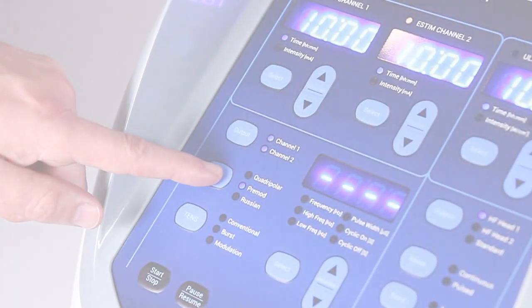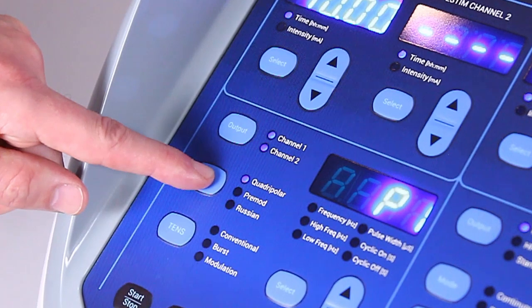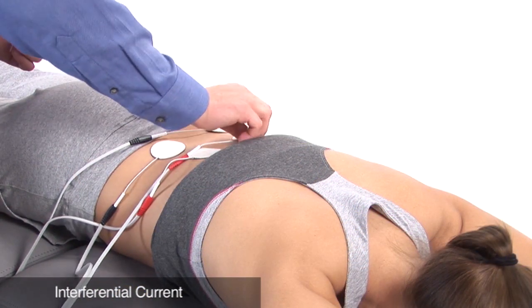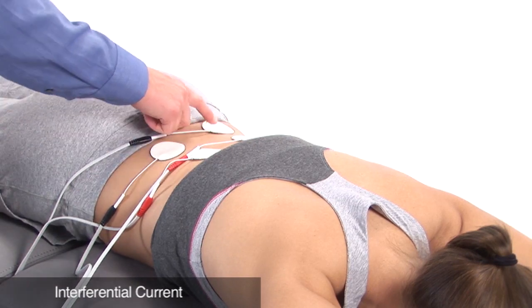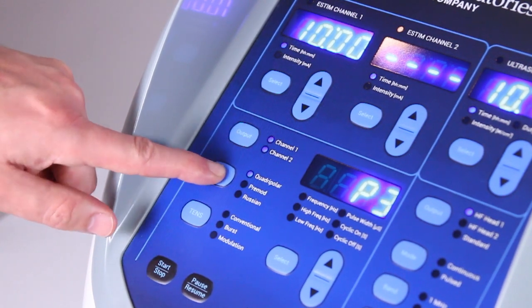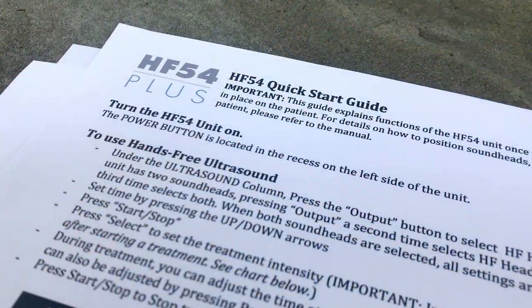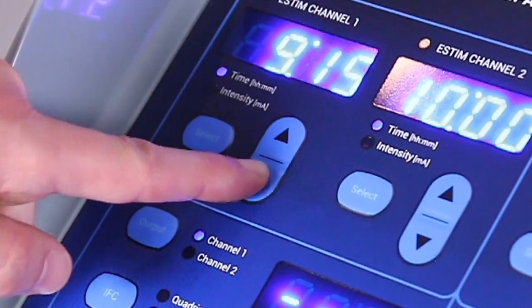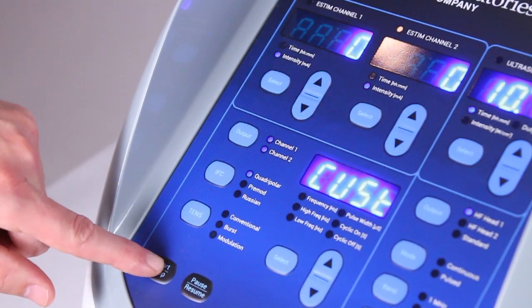With both channels selected, press the IFC button to select quadripolar. Place four electrodes onto your patient in an X configuration. Each channel should be positioned diagonally from one another. Quadripolar treatment includes five presets from P1 to P5 and a custom setting. See our quick set guide for details. Set the time, press start, and then adjust intensity to your choosing.